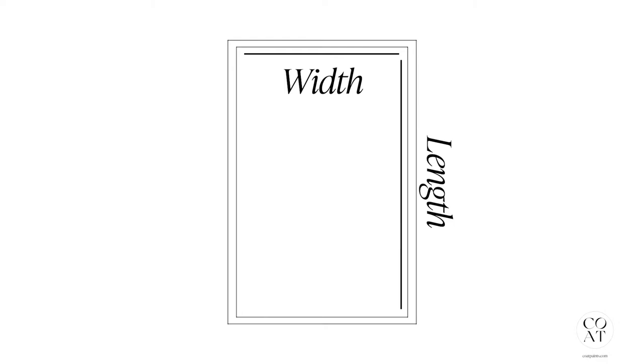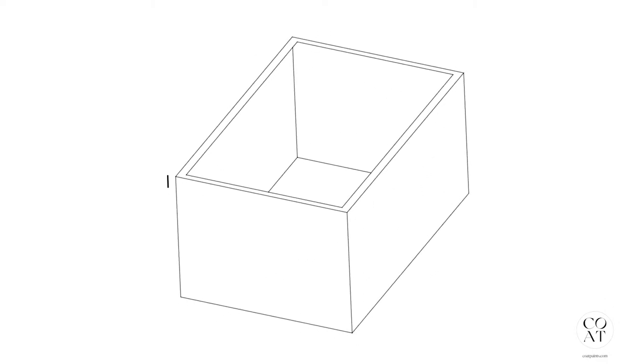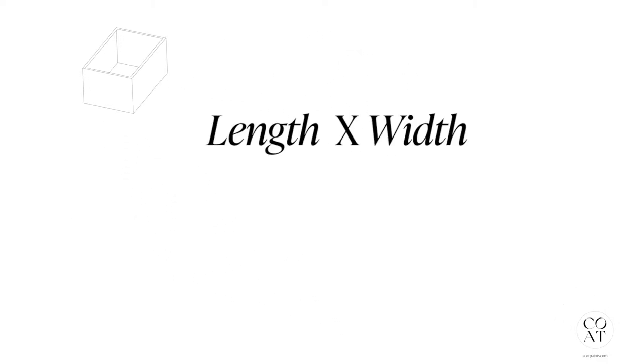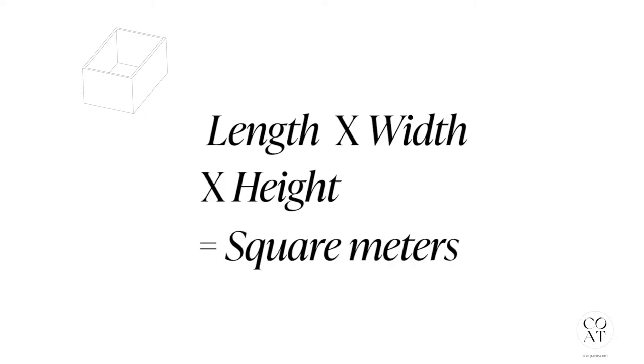So let's start by measuring this room. First of all we measure the length of the room, then the width, and then the height. Once you've got your measurements, multiply the length of the room by the width and then times that by the height, and that will give you your square meterage of the space.